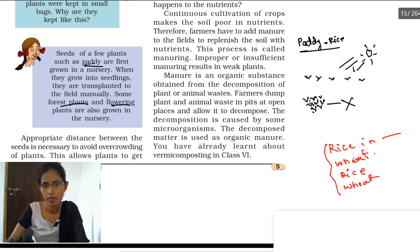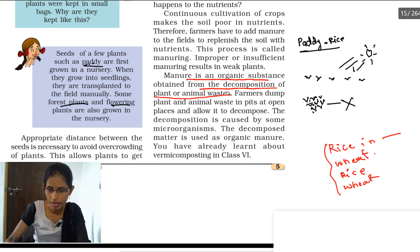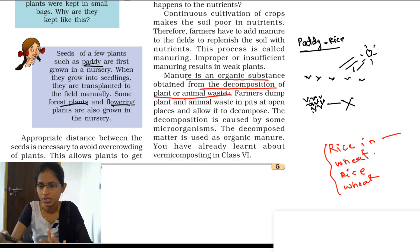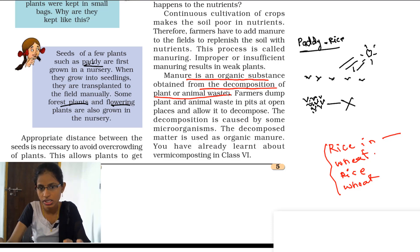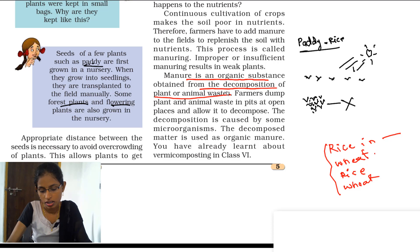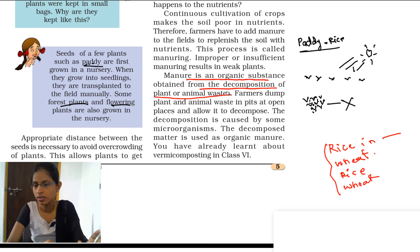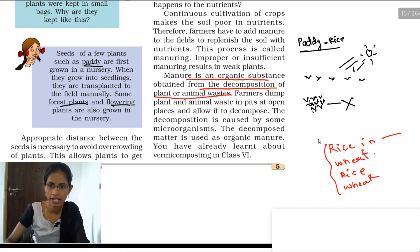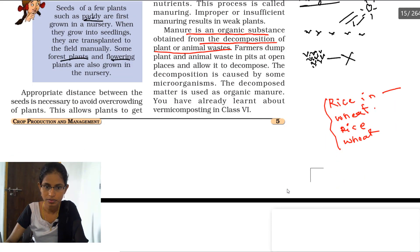Manure is an organic substance obtained from the waste of plants and animals, or by decomposition of plants and animals. In villages you may have seen dumping areas where cow dung and waste plants and animals are thrown. Small microbes and insects decompose this material, which is then carried to the field, mixed into the soil, and the nutrients are replenished.